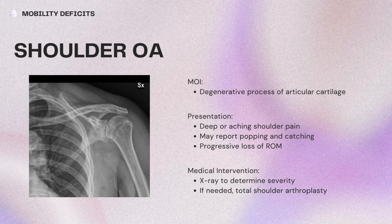Shoulder osteoarthritis: the mechanism of injury is a degenerative process of articular cartilage, typically seen in patients older than 55, and women are more at risk. Risk factors include being overweight, fractures or other joint injuries, and occupational or athletic overuse. The presentation is a deep aching shoulder pain; they may report popping and catching and also have a progressive loss of range of motion. Medical intervention includes an x-ray to determine severity, and if needed, a total shoulder arthroplasty.